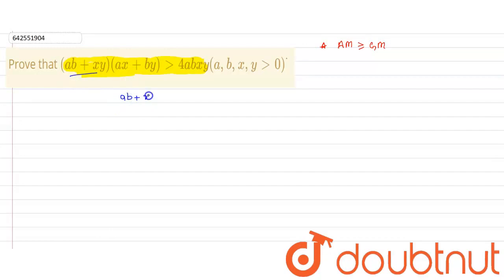ab plus xy. We have two elements. Right? ab and xy upon 2 is greater than equal to (abxy)^(1/2). Right? This becomes ab + xy greater than equal to 2√(abxy). This becomes my first equation.